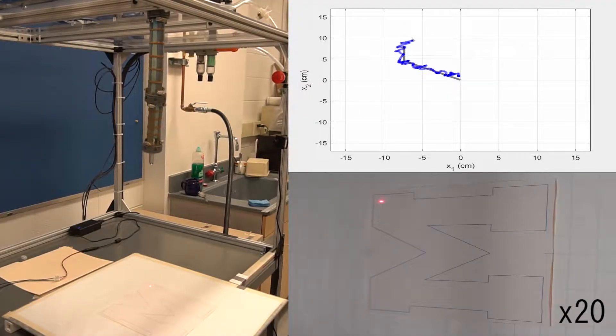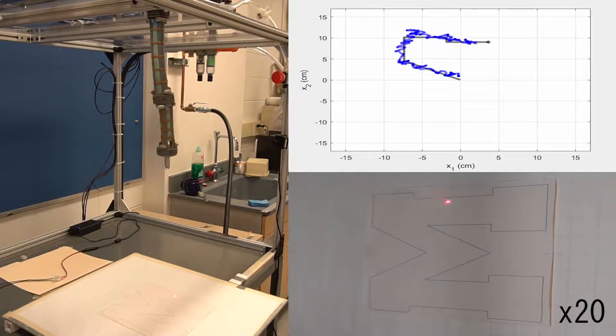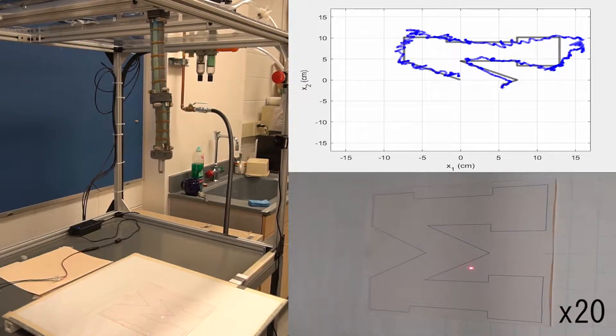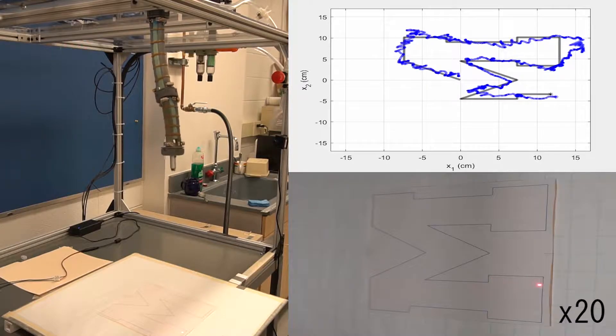We can use this model to construct a model predictive controller allowing us to perform trajectory following tasks with an average tracking error of less than two centimeters.